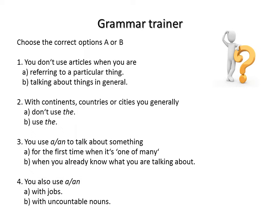Question 3: You use 'a' or 'an' to talk about something — A: for the first time, when it's one of many, or B: when you already know what we are talking about. The correct option is A. The indefinite article is used when we talk about something for the first time. Question 4: You use articles 'a' or 'an' with jobs or with uncountable nouns. We use these articles with jobs, so A is the correct option.